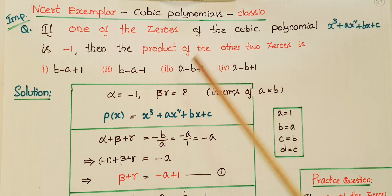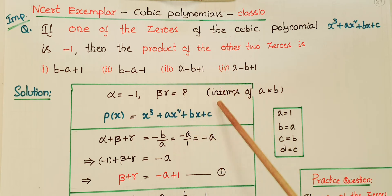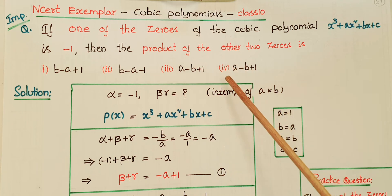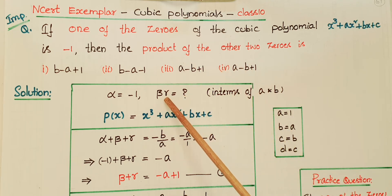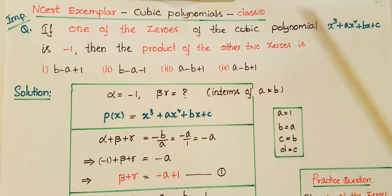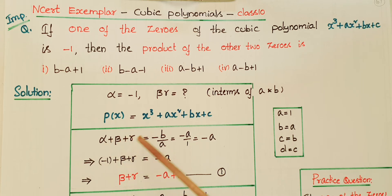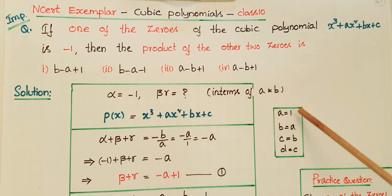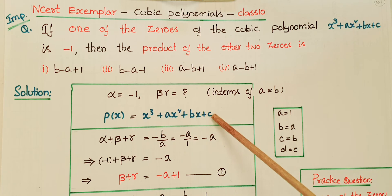We have to find this product in terms of a and b, since the answer options are in those terms. The given polynomial is p(x) = x³ + ax² + bx + c. Here the leading coefficient is 1, so a=1, b=a, c=b, and d=c for the standard formula. We know the sum of zeros: α + β + γ = −b/a.